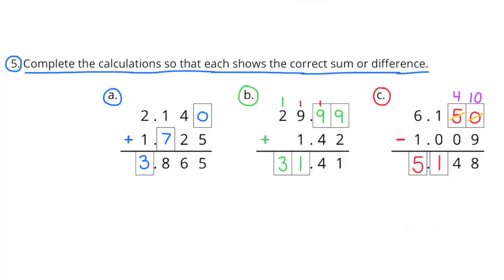Number 5: Complete the calculations so that each shows the correct sum or difference. A: 2 and 140 thousandths plus 1 and 725 thousandths equals 3 and 865 thousandths. B: 29 and 99 hundredths plus 1 and 42 hundredths equals 31 and 41 hundredths. C: 6 and 150 thousandths minus 1 and 9 thousandths equals 5 and 148 thousandths.